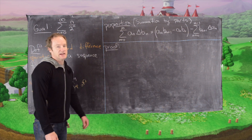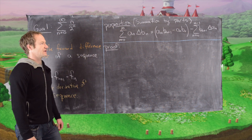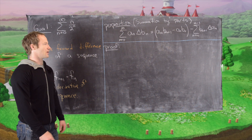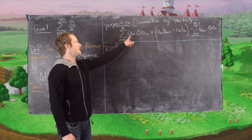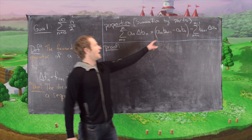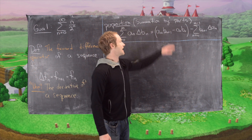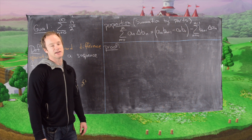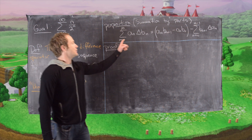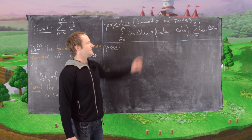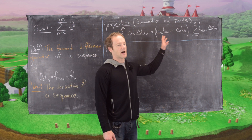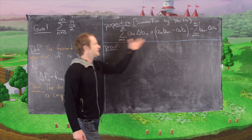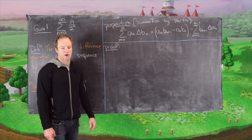The next tool we're going to need is the summation by parts formula. This is a summation version of the classic integration by parts formula. We have the sum of aₙ delta bₙ, written in terms of the a's and b's — like u times dv, giving uv evaluated at two points, minus the sum of v du. It looks exactly like an integration by parts formula.